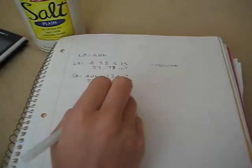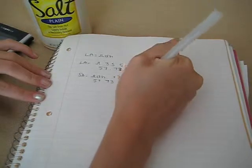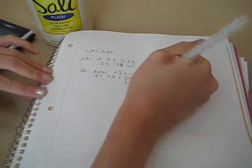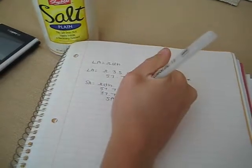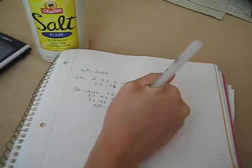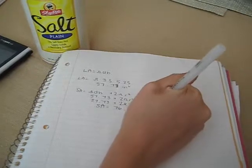Since we know the radius is 1.75, you do 2 pi 1.75 squared. Adding that all together, the surface area of the salt cylinder is 76.98 inches squared.